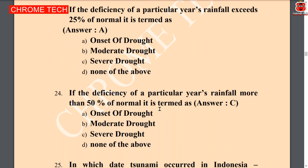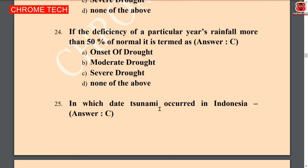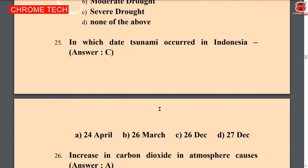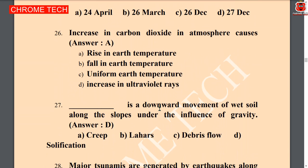Next question: if the deficiency of a particular year's rainfall exceeds 25 percent of normal, it is termed as — onset of drought is the correct answer. Next question: if the deficiency of a particular year's rainfall is more than 50 percent of normal, it is termed as — severe drought is the correct answer. Next question: in which year did the tsunami occur in Indonesia — option C, 26 December.